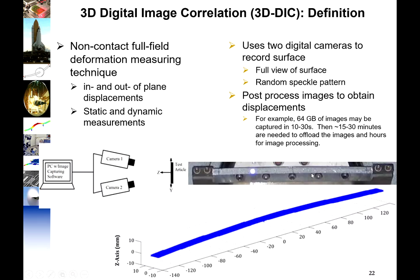That concludes the laser vibrometer section. The last measurement technique is digital image correlation (DIC). We use two cameras in 3D (or one camera in 2D) to take photos of a part and compare them to work out the displacement of every point on the structure. If you have fast enough camera sample rates and enough light, you can work out motion at many points simultaneously.